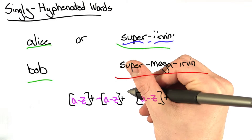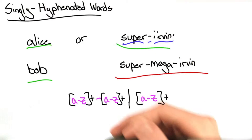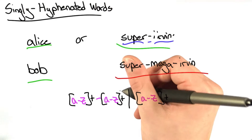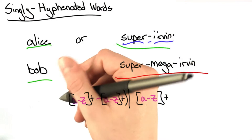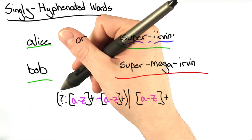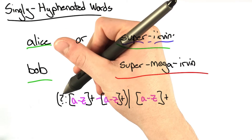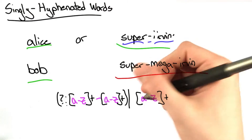So really, I want to match either of these. And in order to do this, I'm going to have to group them. In Python, we group them using parentheses — and don't forget the question mark colon notation as well.